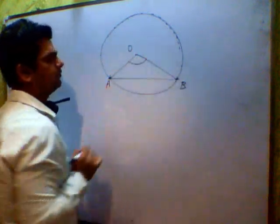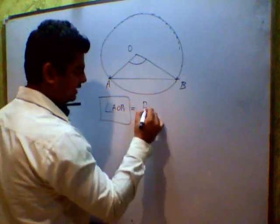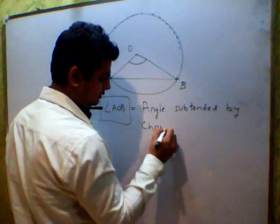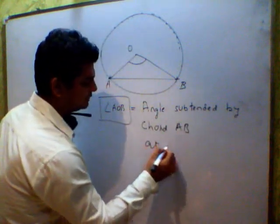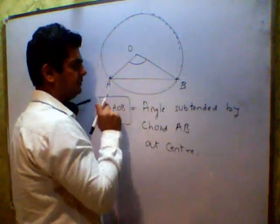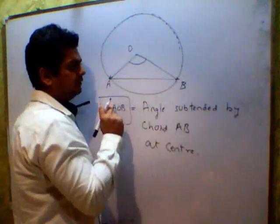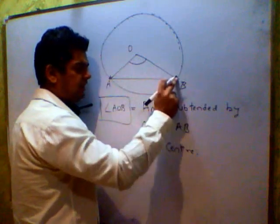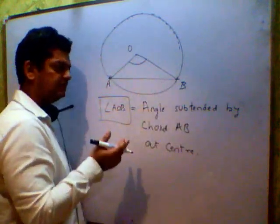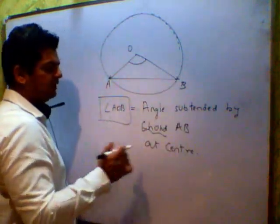If I join AO and OB, there is an angle formed. This angle AOB is called the angle subtended by chord AB at the center. These two points are making things happen as a line passes through them to the center. If I say angle subtended by chord AB at center or angle subtended by arc AB at center, it means the same thing, because the angle is subtended by the two endpoints.